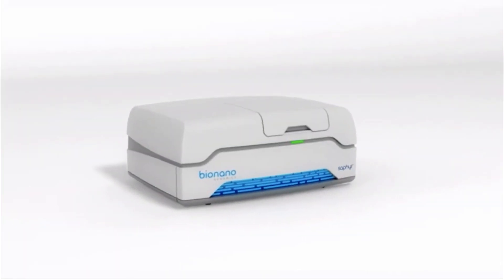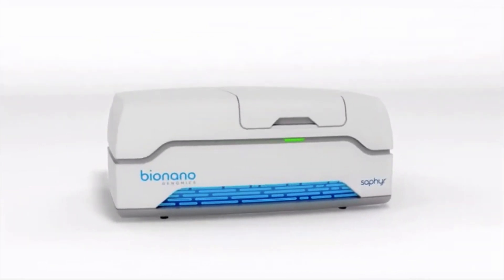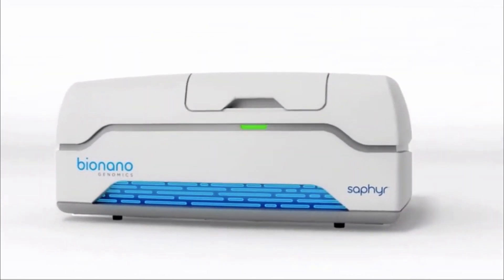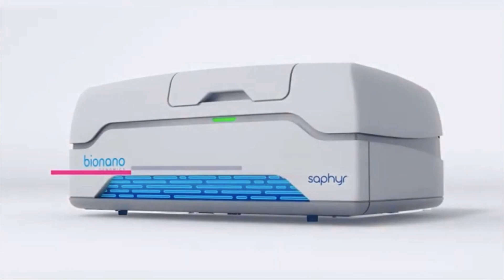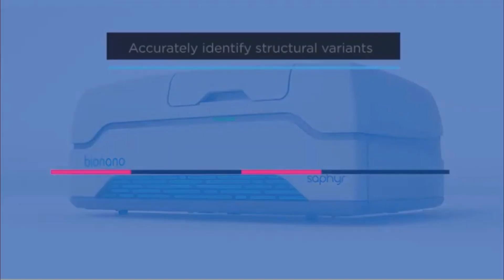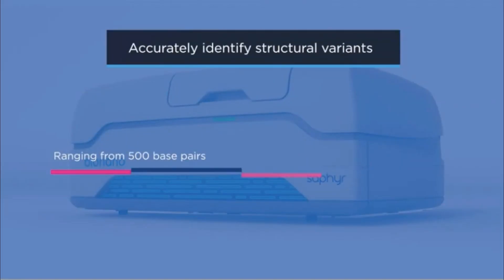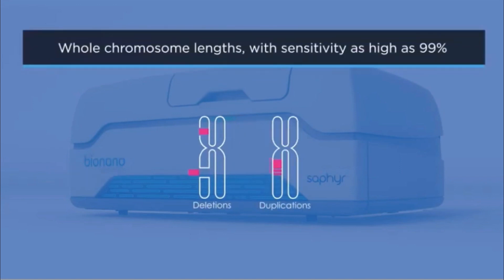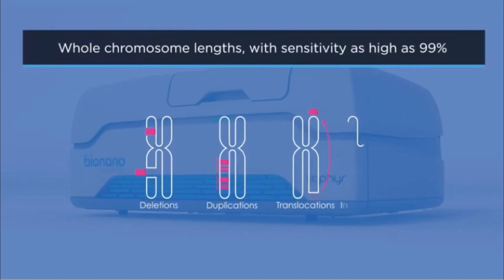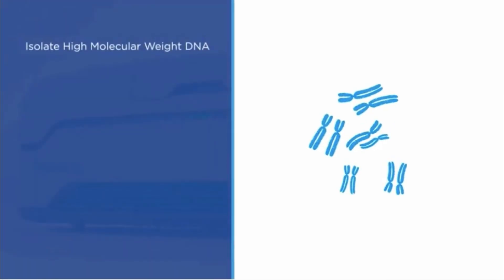Whole genome imaging with the Saphyr system takes an entirely different approach to understanding the structure of DNA through imaging. It has proven to accurately identify structural variants ranging from 500 base pairs to whole chromosome lengths with sensitivity as high as 99 percent.